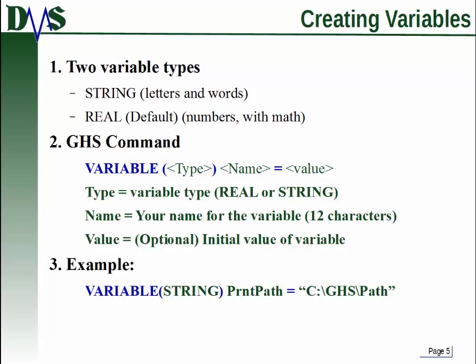For example, if I want to create the variable that's a print path, that would be C colon GHS path. That's not the actual path, by the way, I just made that up. And you'll notice that when I created it, I had to tell GHS that it was a string variable. If I had left out the string part, GHS would assume that it was a real variable and it would get annoyed because it's saying, why are you trying to put letters inside a number?